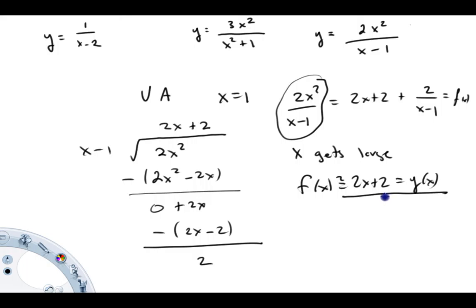It doesn't have a horizontal asymptote because the top is one power higher than the bottom. So again, the purpose of this video is to demonstrate how to find these asymptotes. I'll make another video on how to use them to graph a function. Hope this helps demonstrate these concepts. Have a great day.